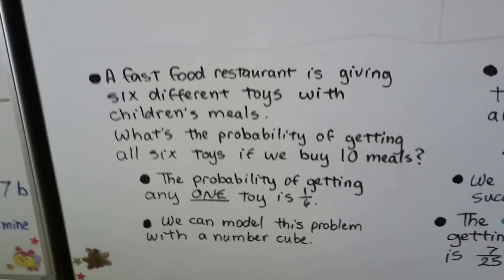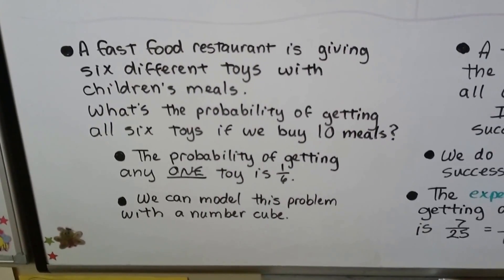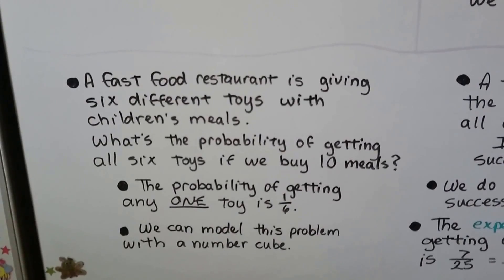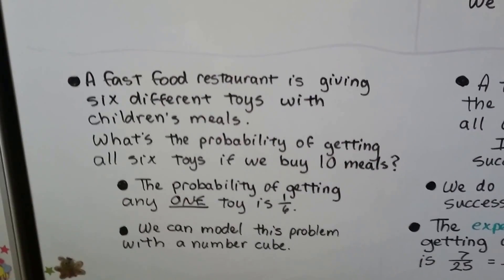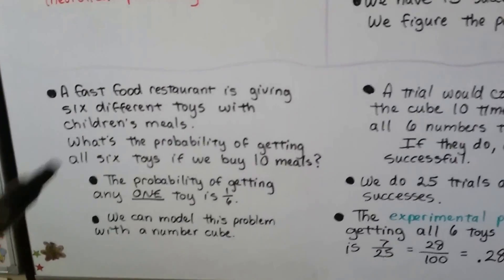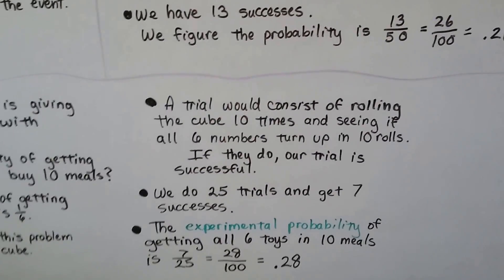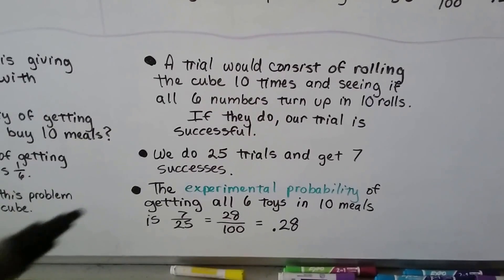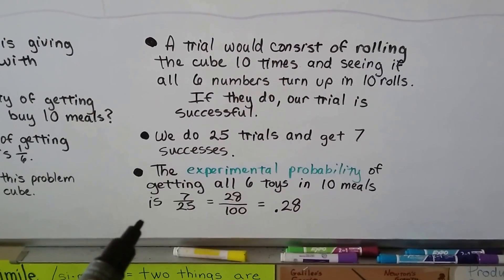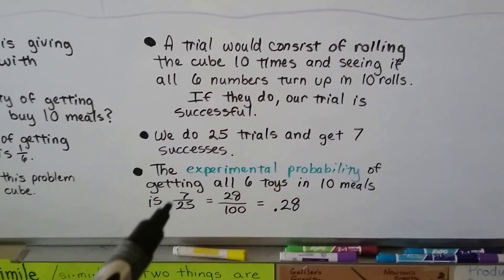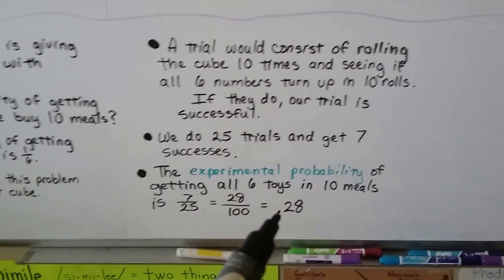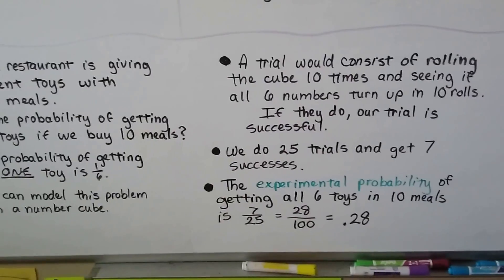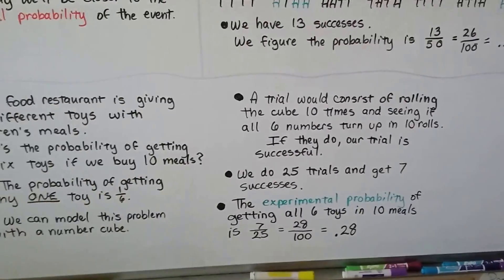A fast food restaurant is giving six different toys with children's meals. What's the probability of getting all six toys if we buy 10 meals? The probability of getting any one toy is one sixth. There's one of six different toys, so it's one sixth. And we can model this problem with a number cube. Since there's six toys and a number cube, a die, has six sides, a trial would consist of rolling the number cube 10 times and seeing if all six numbers turn up in 10 rolls. If they do, our trial is a success. We can do 25 trials and let's say we get seven successes. The experimental probability of getting all six toys in 10 meals is seven twenty-fifths or 28 one-hundredths, which equals .28. We can pretend that each number on the number cube is one of the six toys. And we just roll it 10 times to see if each number comes up at least once.